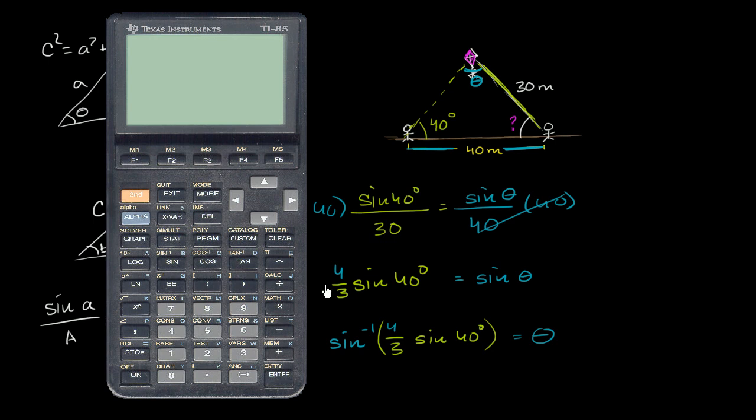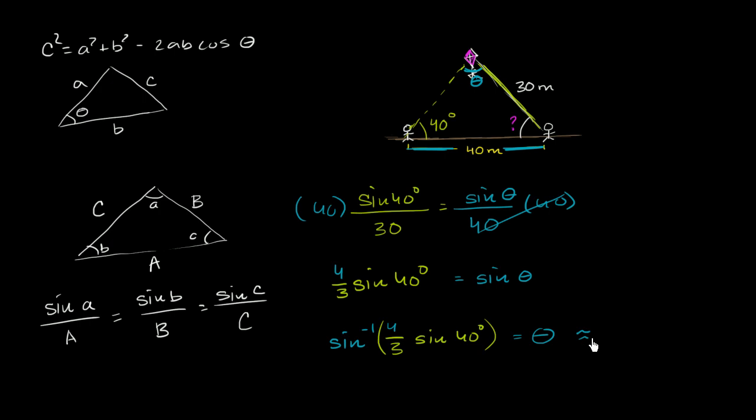So let's get a calculator out and see if we can calculate it. Let me just verify I am in degree mode, very important. All right, now I'm going to take the inverse sine of 4 thirds times sine of 40 degrees. And that gets me, let's maintain our precision here, 58.99 degrees roughly. So this is approximately equal to 58.99 degrees.